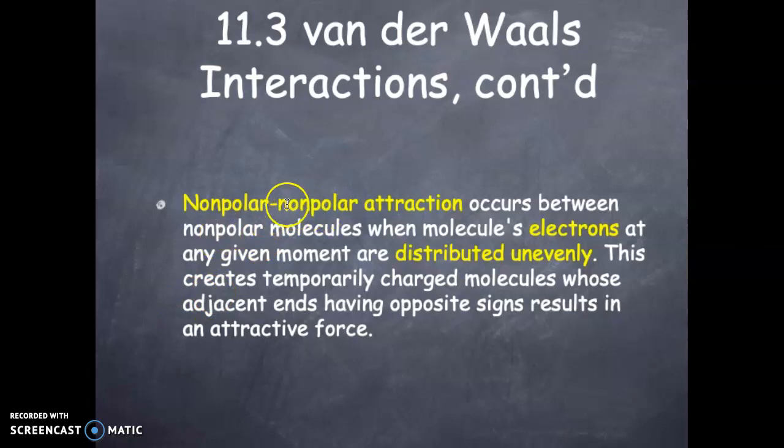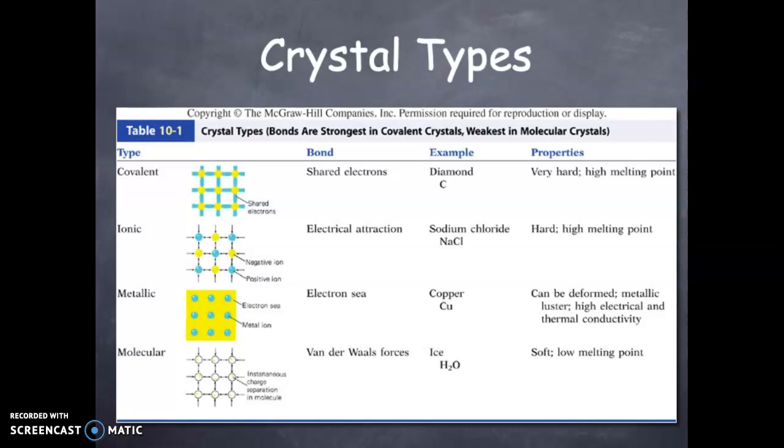Nonpolar-nonpolar attraction occurs between nonpolar molecules. Electrons at any given moment are distributed unevenly. So random, uneven distribution will cause nonpolar to be attracted to nonpolar. This creates temporarily charged molecules whose adjacent ends, having opposite signs, result in attractive forces.